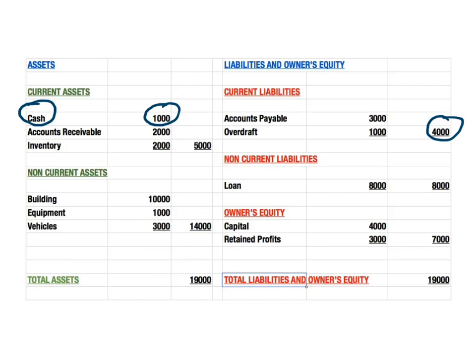Each individual industry will have a different standard for what its liquidity should be, but it's generally accepted that a current ratio of 2 to 1 is a good level of liquidity. It gives the business breathing space so that it can pay back all of its current liabilities without having to rely on all of its cash reserves, and still have current assets left over to generate money in the business.